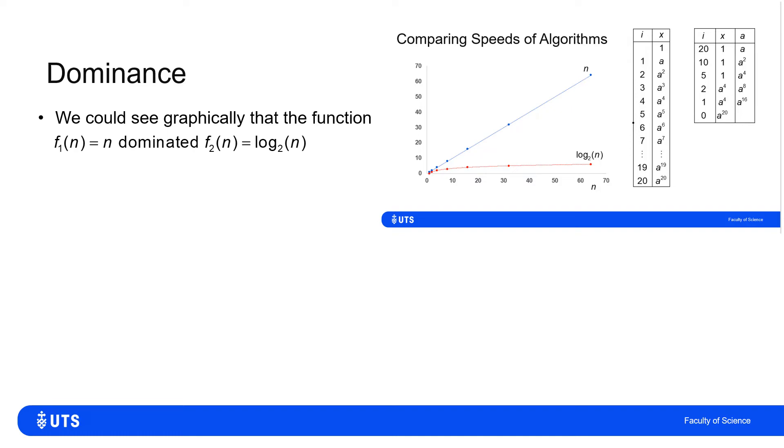So we can see graphically that the linear line, the linear trend in blue, is clearly a lot larger. In this case, a lot more steps, a lot slower than the logarithmic line or curve that was log base 2 of n.